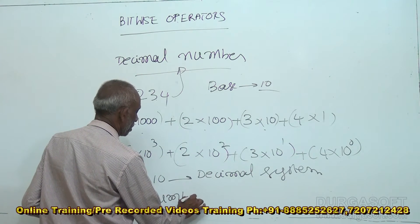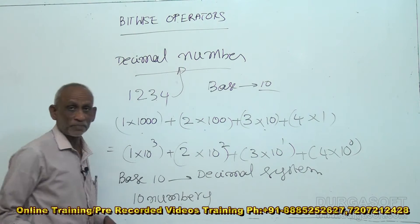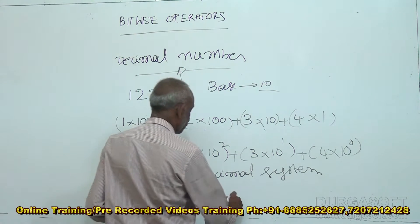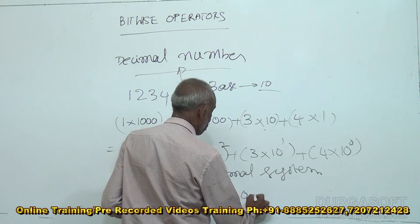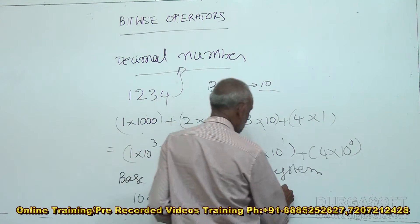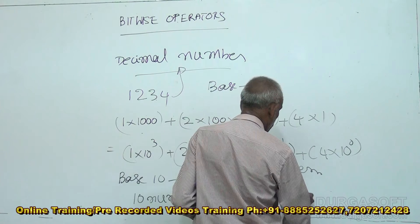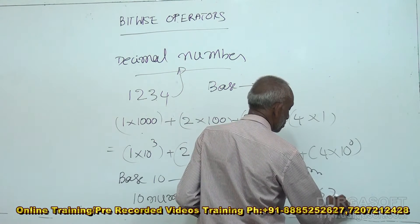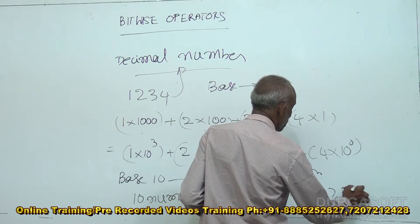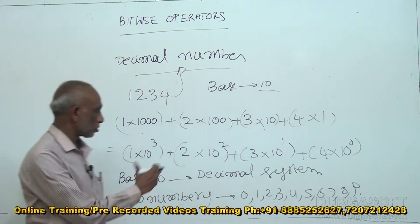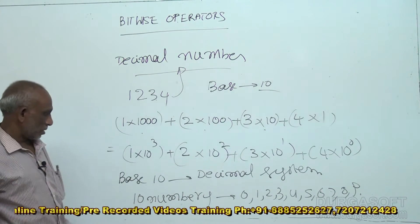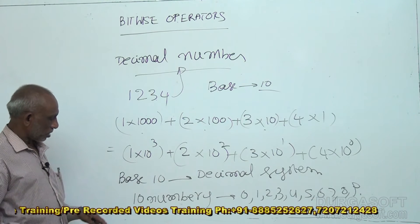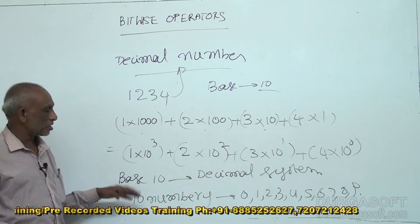Now let us see about the ten digits. What are those? 0, 1, 2, 3, 4, 5, 6, 7, 8, 9 — zero to nine, there are ten digits or ten numbers. This is base ten and the decimal system.